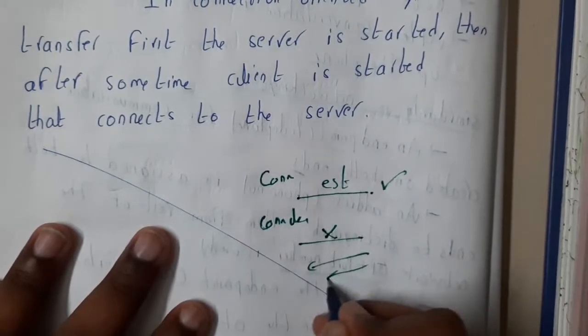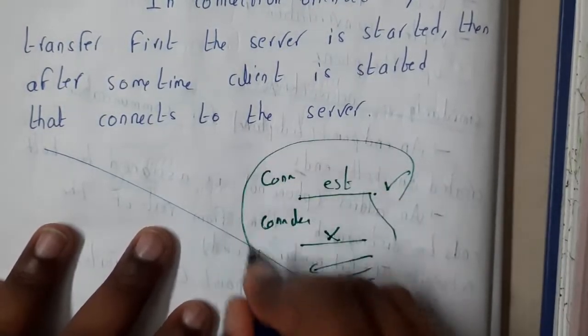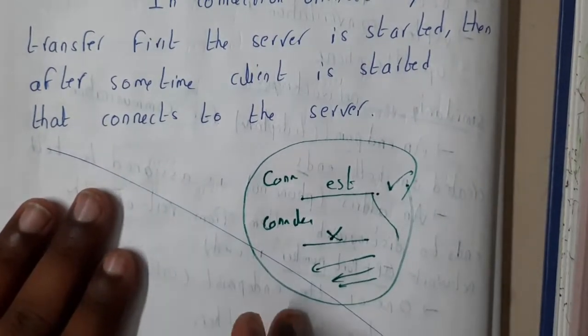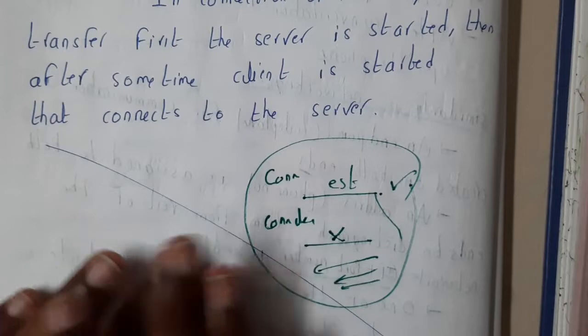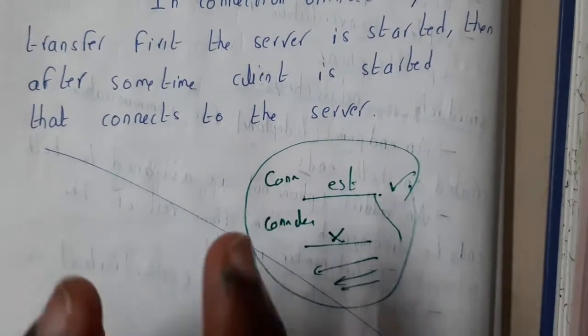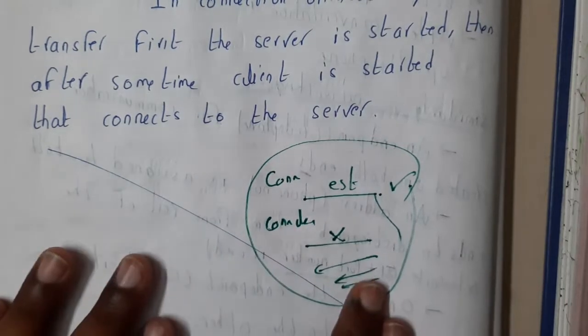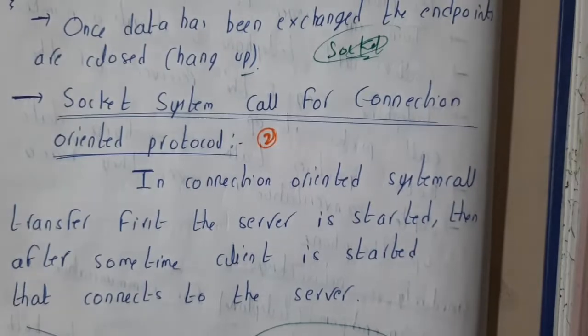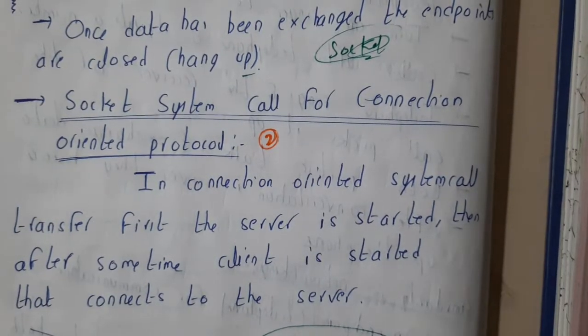If it is connection-less, then no establishment is done, direct data transfer is done. Please remember these two things. If you remember these things, this topic and the next topic which we'll be discussing, connection-less, both will be 100% clear. Connection means establishing is mandatory, connection-less means direct data transfer, there is no need of any establishment.